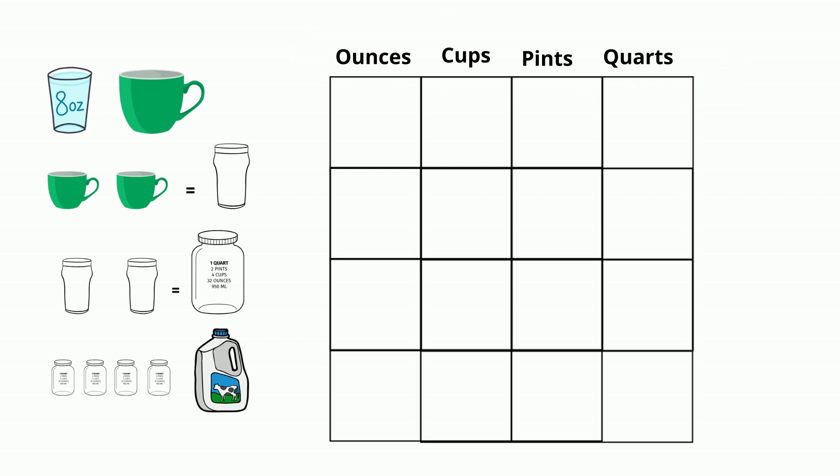Next, we know that 8 ounces make up a cup, 2 cups make a pint, and 2 pints make a quart. We will eventually get to the gallons. Now under the ounces, we have 8, 16, 32, and 64.